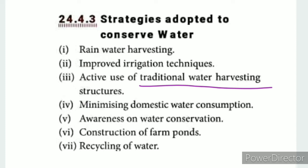Minimizing domestic water consumption is essential. Awareness on water conservation will be important in future countries where water is scarce. The construction of farm ponds is one key method of water conservation and recycling.